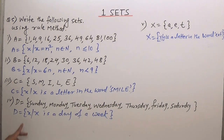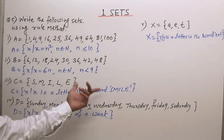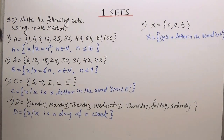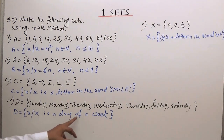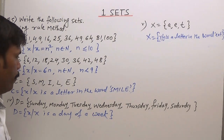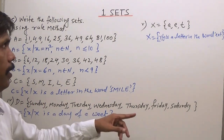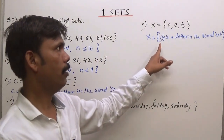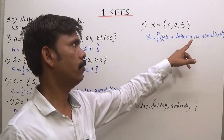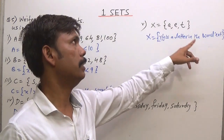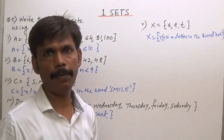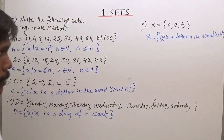For days of a week: x is a day of a week. And the last one: y is a letter in the word 'eat.' These complete all the set-builder form answers.